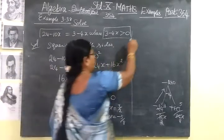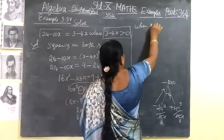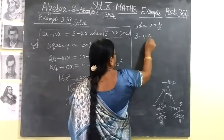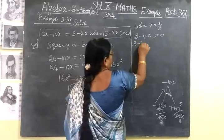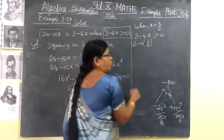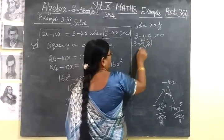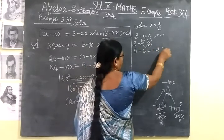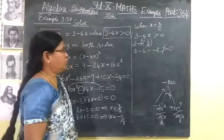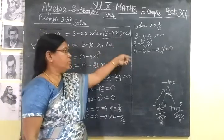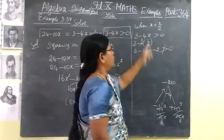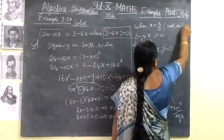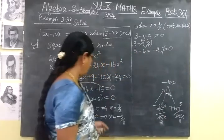So let me substitute when x = 3/2. Here you substitute into 3-4x, it should be greater than 0. So 3 - 4(3/2). If we cancel, we get 3-6. This is -3, not greater than 0. Since we are getting a negative number, this is not suitable. This is not admissible, you can't take it for the solution.